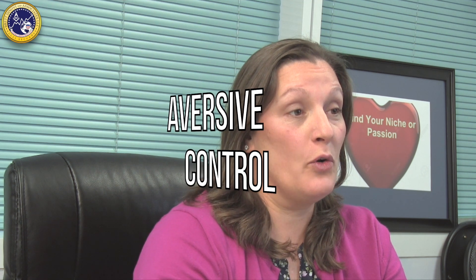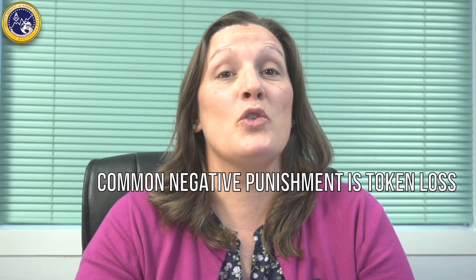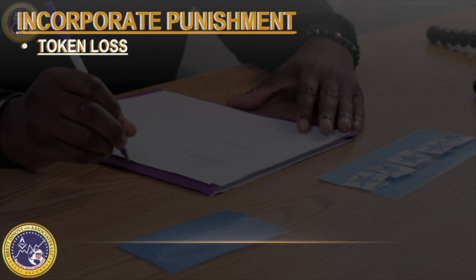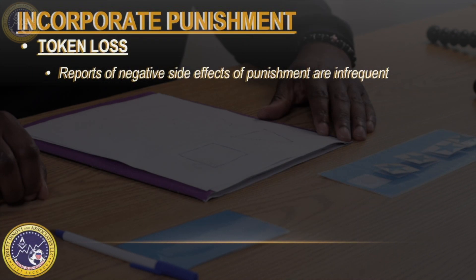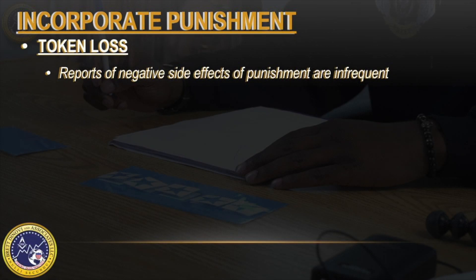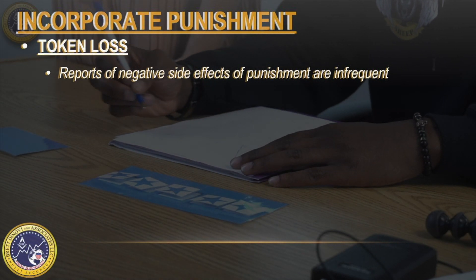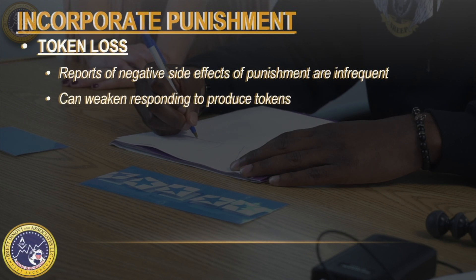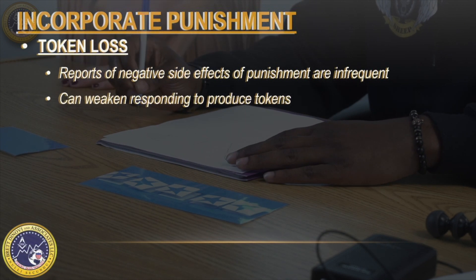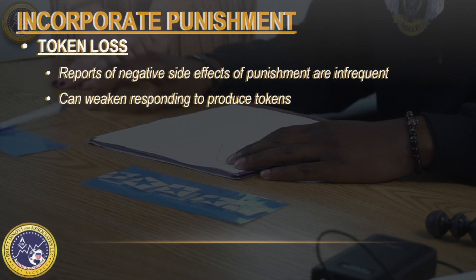The last area is aversive control. It may be necessary to combine punishment with token systems, and a common negative punishment is to use token loss contingent on problem behavior. One advantage of token loss is that the negative side effects associated with punishment — such as escape and social disruption seen with other forms of punishment — have been reported infrequently when token loss is used in a token economy system. However, token loss can weaken responding to produce tokens, especially if tokens are produced on a ratio-based schedule.